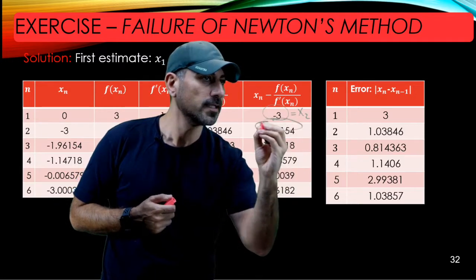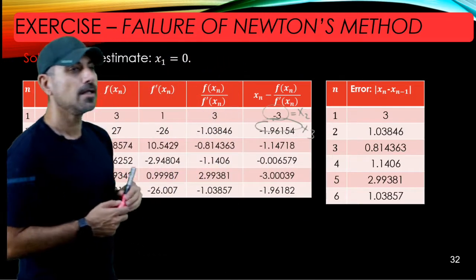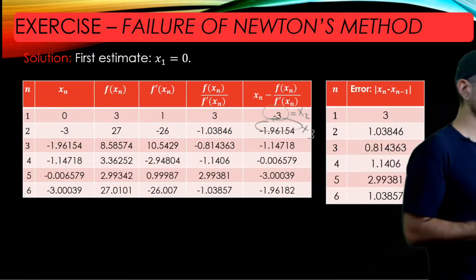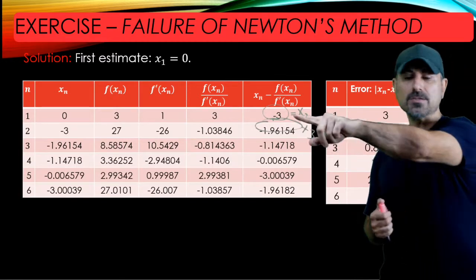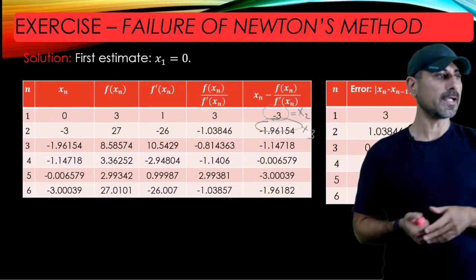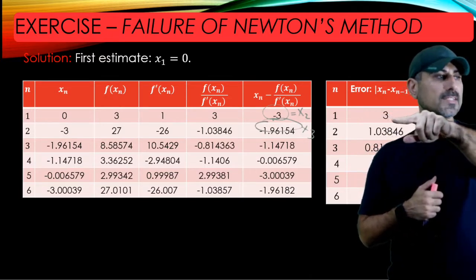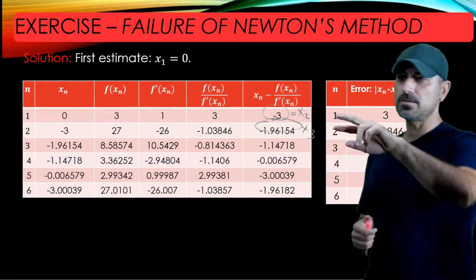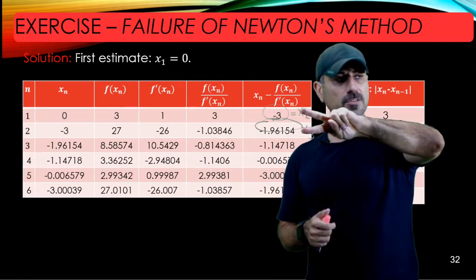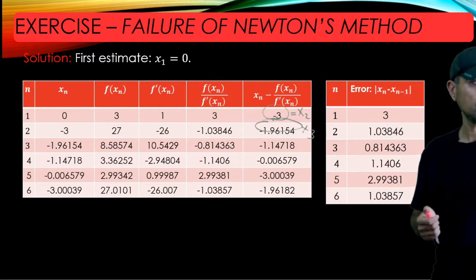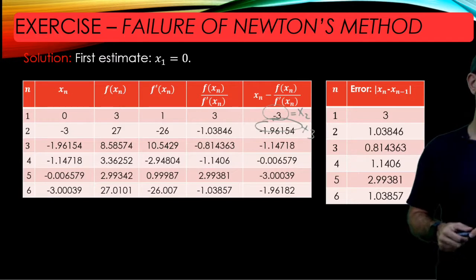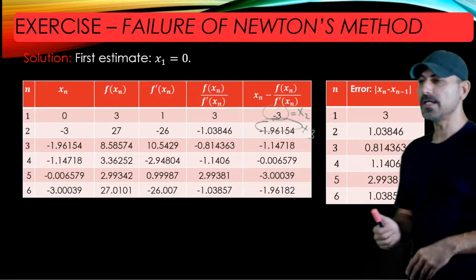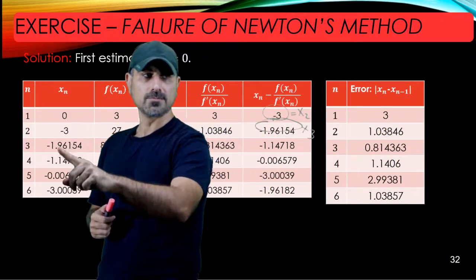In the meantime, you check the difference of two successive approximations. x₁ was 0 and you got x₂ to be -3, so the difference is 3 in absolute value—this is what we call error or precision. For the next two, you look at the difference in absolute value, which gives 1.03846. Obviously this is not the desired accuracy.